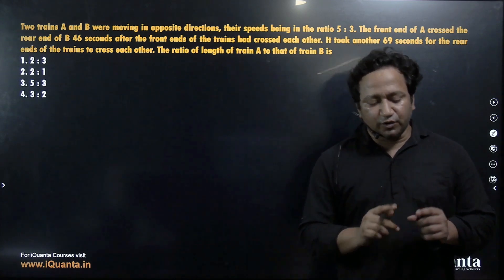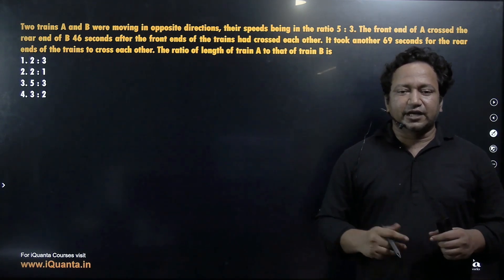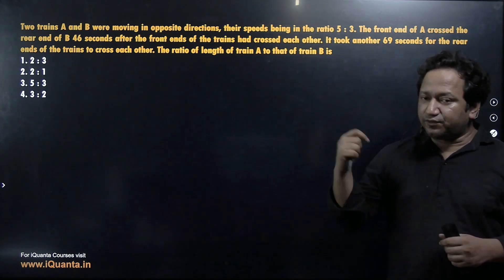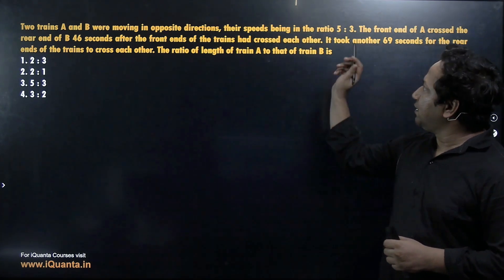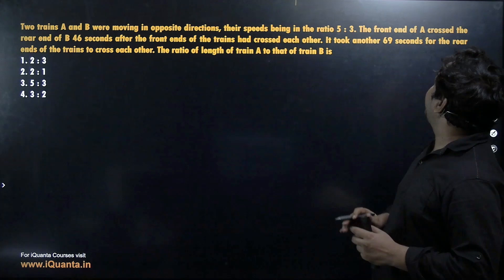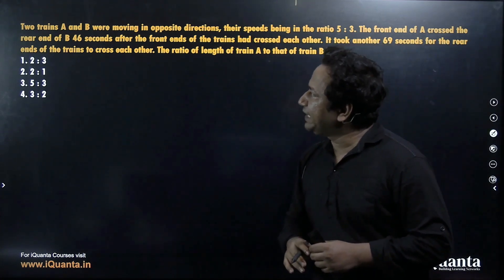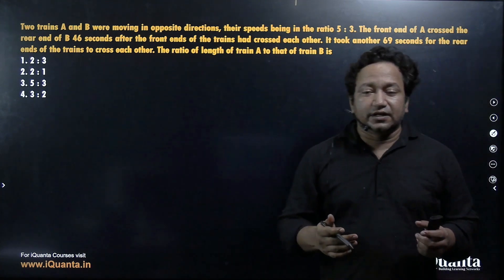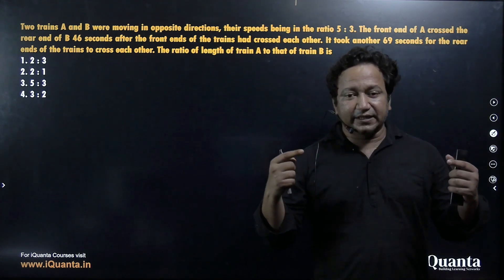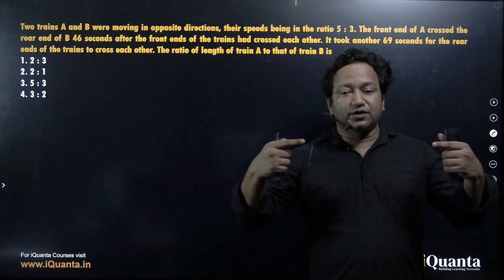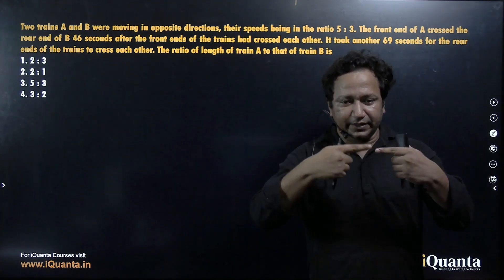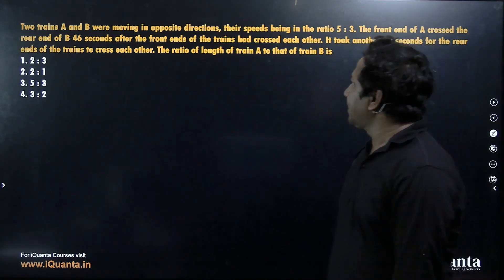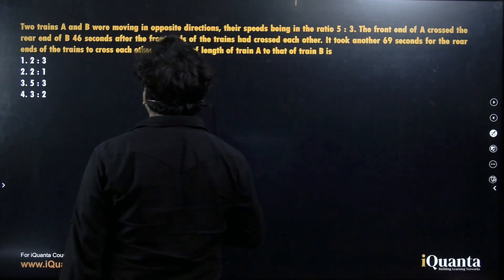Now, when two objects are moving in opposite direction, there are two cases. One, they are moving away from each other. Other, they are moving towards each other. That is something which we have to crack based on further information.